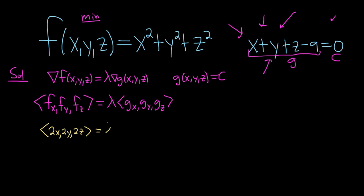And this is equal to lambda. Let's see, g_x, g_y, g_z are going to be easy, they're all just going to be 1. So we just get 1, 1, 1. So this is equal to lambda, lambda, lambda.